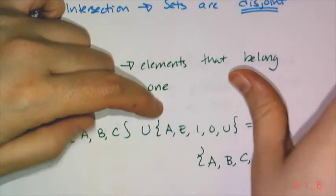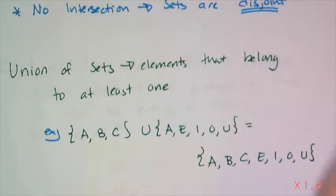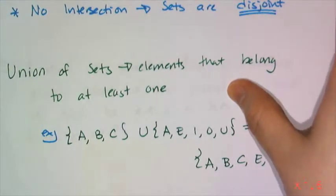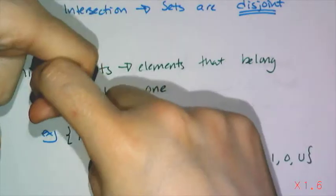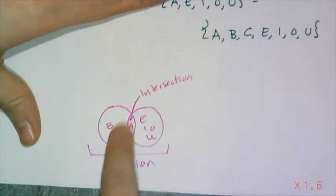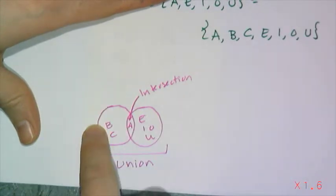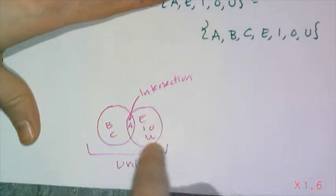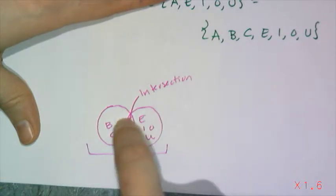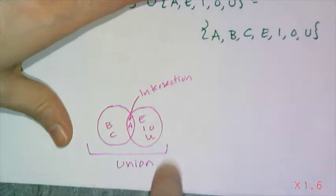Now, if you want a throwback to elementary school, you can look at this in terms of Venn diagrams, because sets and Venn diagrams go hand in hand. So here is a Venn diagram of these two sets, ABC is one circle, AEIOU is the other circle. The intersection is where they overlap, so they have A in common, and the union is all of this stuff together.